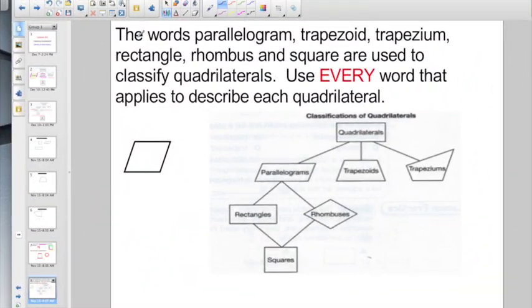Check out this one. It says the words parallelogram, trapezoid, trapezium, rectangle, rhombus, and square are used to classify the quadrilaterals. So it looks to me like I have something going on in the parallelogram family here. So parallelogram would be one of my words I'd use to describe it. But it also looks like it has four equal length sides. So I would say it would also have to be a rhombus. You would write down parallelogram and rhombus if you were describing this particular shape. And no, it's not a diamond.